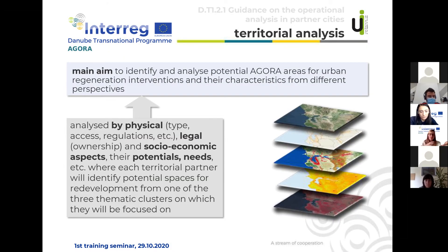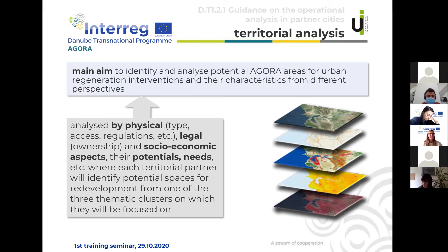Now moving to another important part: territorial analysis. The main aim of territorial analysis is to identify and analyze potential Agora areas for urban regeneration interventions and their characteristics from different perspectives. Those areas will be analyzed by physical, legal, and socio-economic aspects. Their potential and needs will be analyzed, and territorial partners will identify which potential areas will be addressed in the Agora project, with a focus on the chosen thematic cluster.